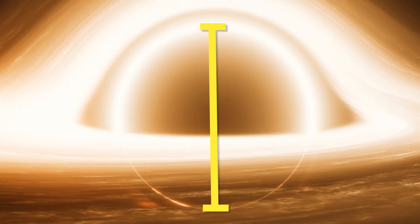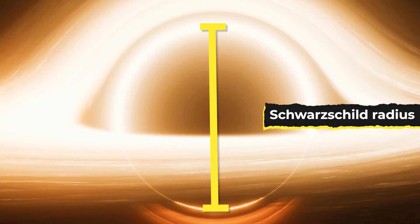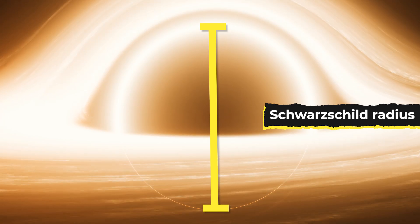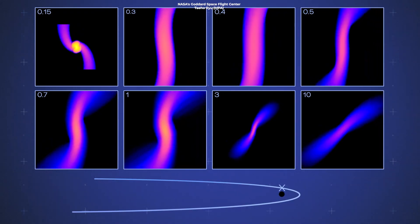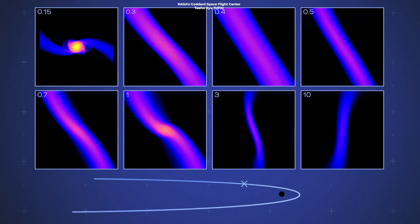The black hole's size is known as the Schwarzschild radius, or the radius at which nothing can escape. So when a star touches the Schwarzschild radius, matter from it will get sucked into the black hole.